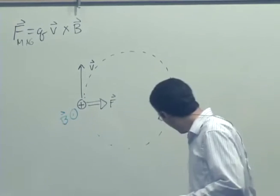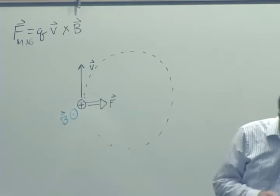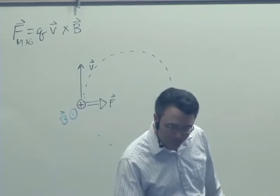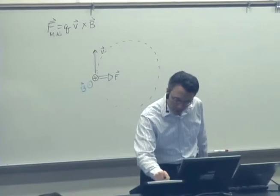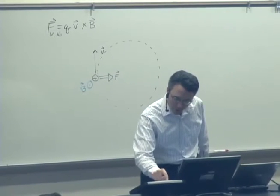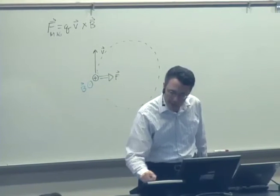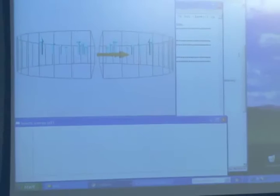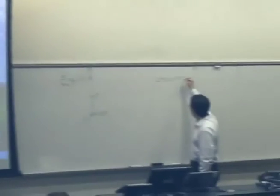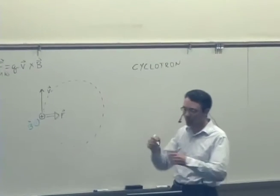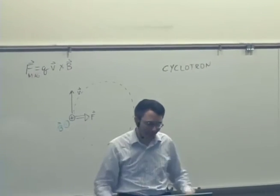I just wanted to show one more application of this. Early in the days of particle physics, how did you actually get particles to accelerate? What was the earliest type of particle accelerator? Well, that was called a cyclotron.